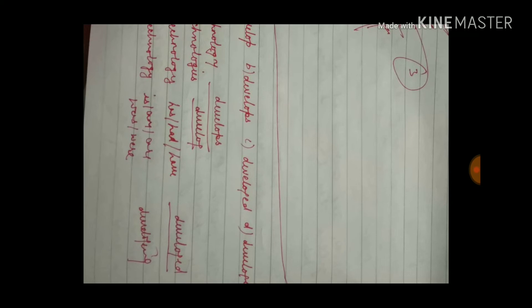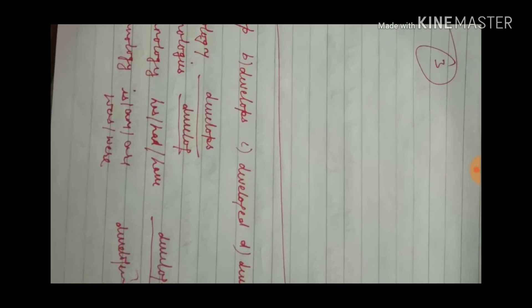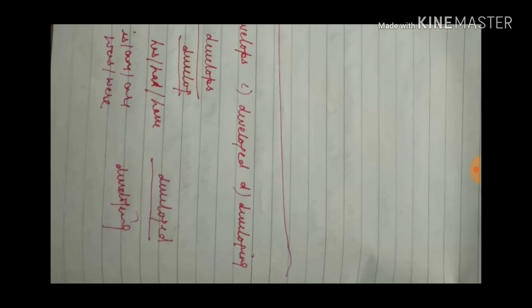And lastly, if with 'technology' you see is, am, are, was — then you use 'developing.' So focus carefully: singular third person gets 'develops' (with S or ES). In plural form, use 'develop.' With has/have/had, use 'developed.' With is/am/are/was, use 'developing.'